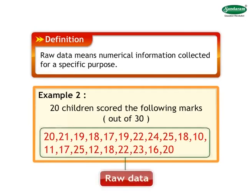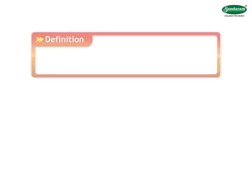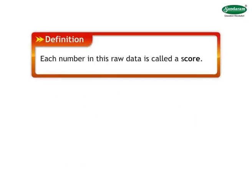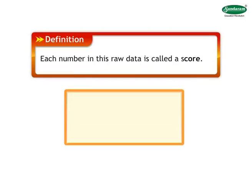That is what raw data is all about. Each number in this raw data is called a score. Example: Single number 20 is a score. Single number 10 is also a score.